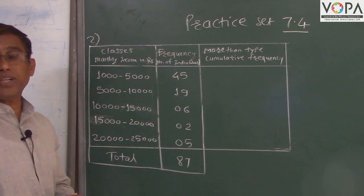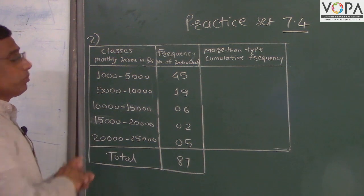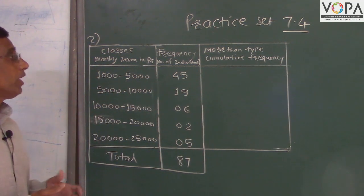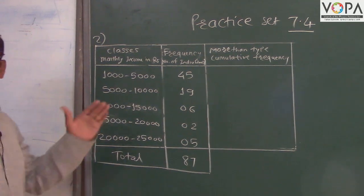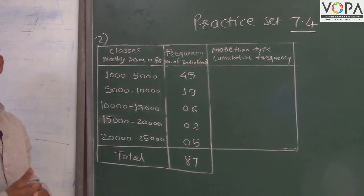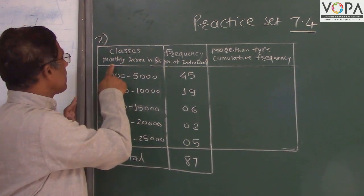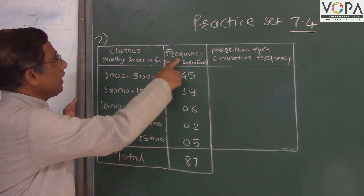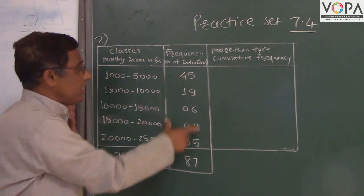We take practice set 7.4, example number 2. From the given information we have to make a more than type cumulative frequency distribution table. They are given classes monthly income in rupees. Here frequencies means number of individual families.